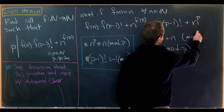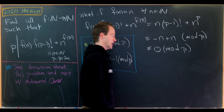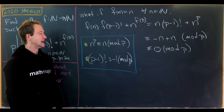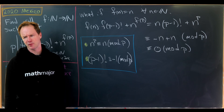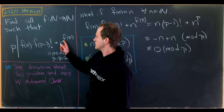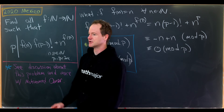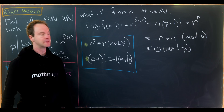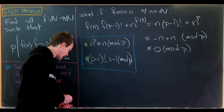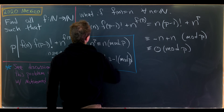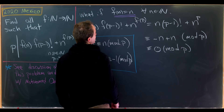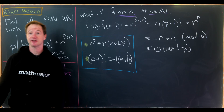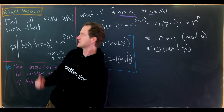Being congruent to 0 mod p is equivalent to being divisible by p. So we've confirmed that the identity function f(n) = n for all natural numbers n is indeed a solution to this functional equation. Now let's show that it's the only solution.